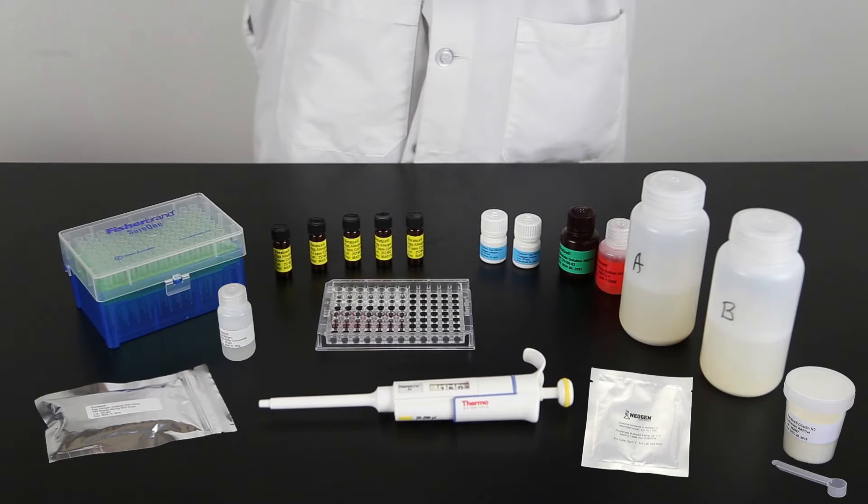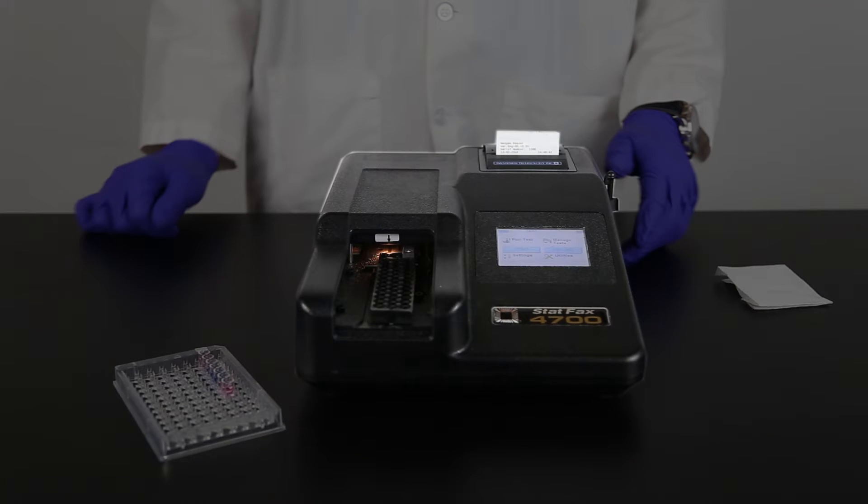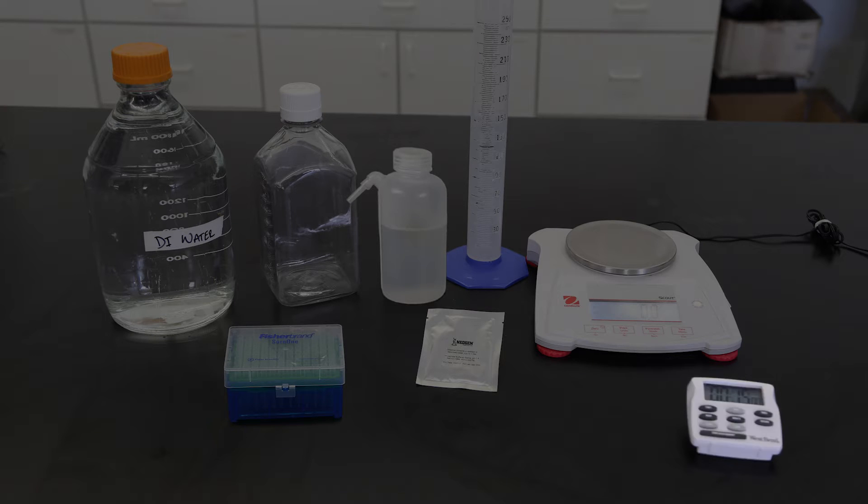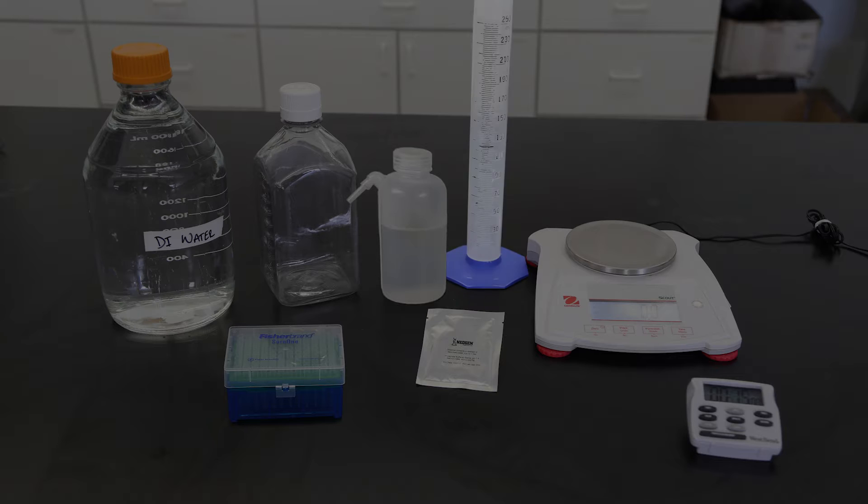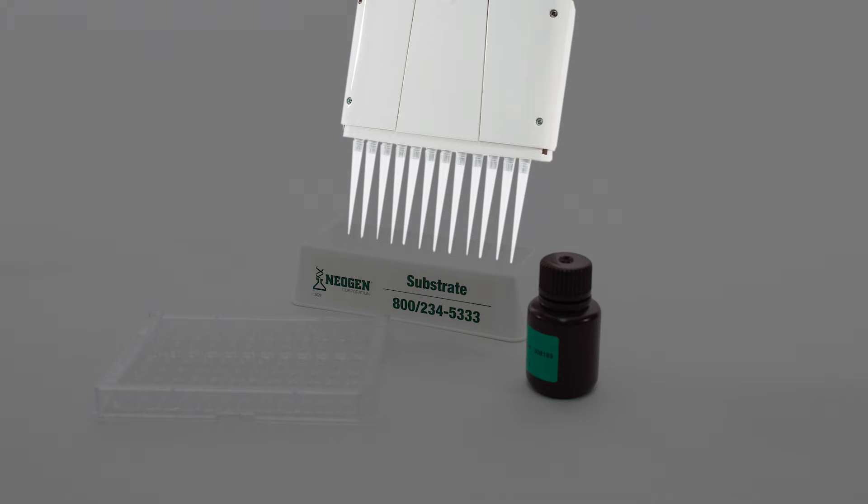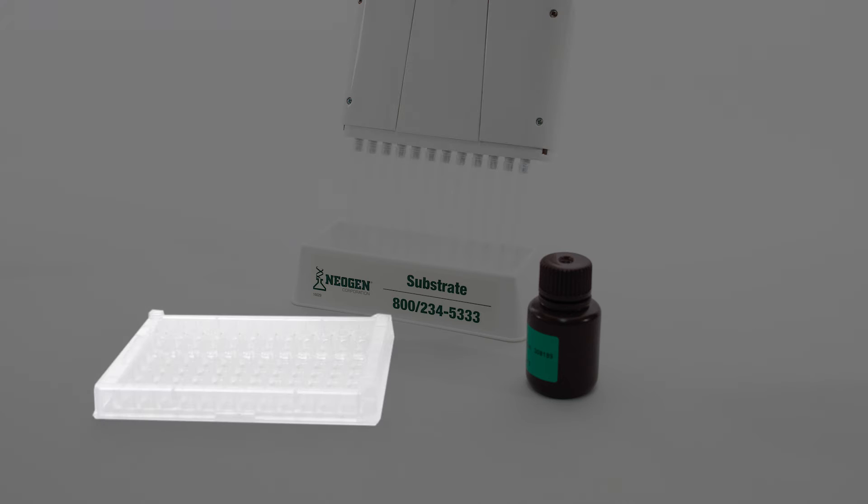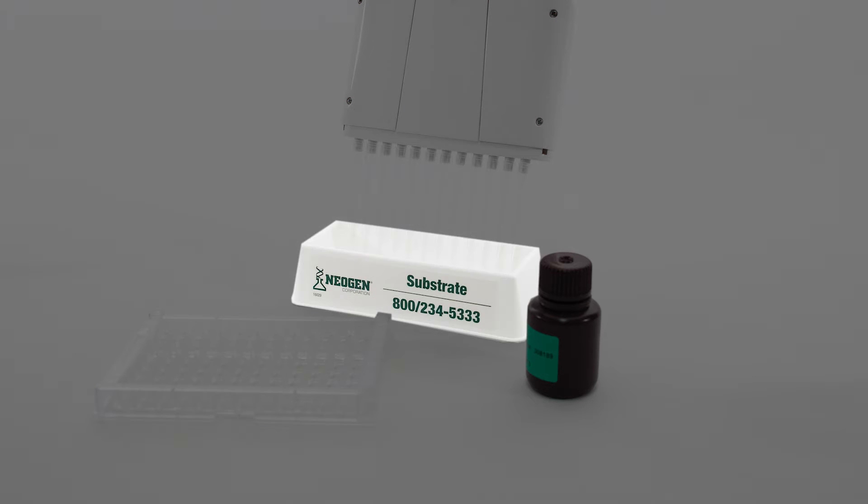In addition to Neogen's test kit, materials recommended but not provided are: microwell strip or plate reader, timer, one liter bottle to prepare wash buffer, deionized or distilled water, graduated cylinder, wash bottle, paper towel, pipette tips, adjustable single and 12-channel pipetter, microwell holder, and reagent boats.